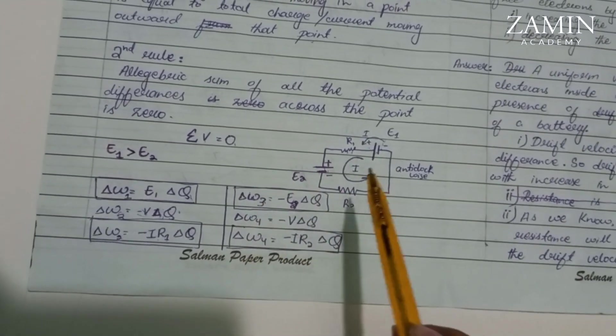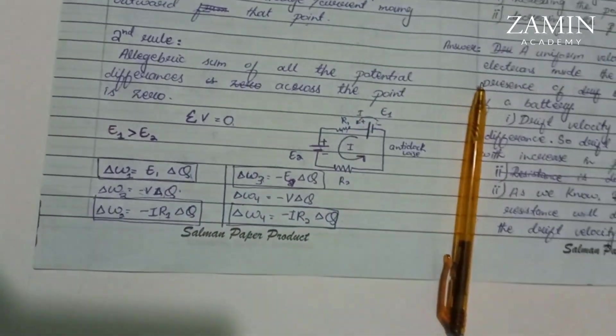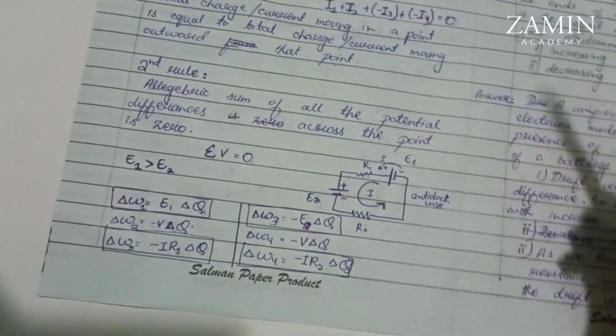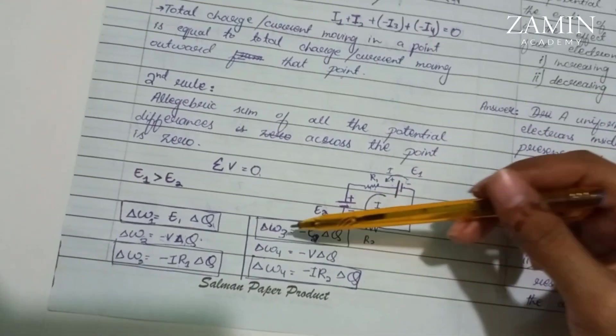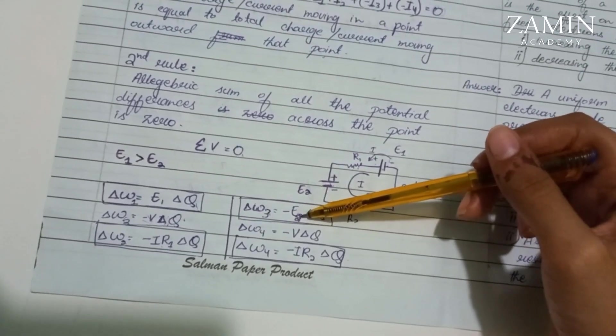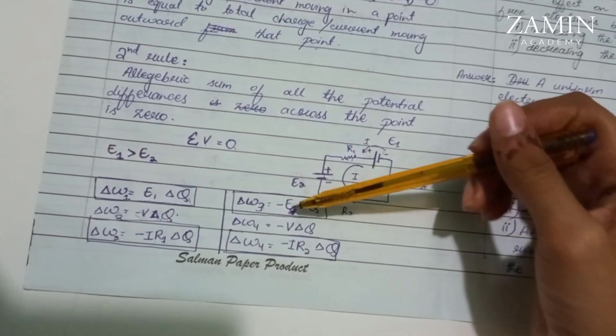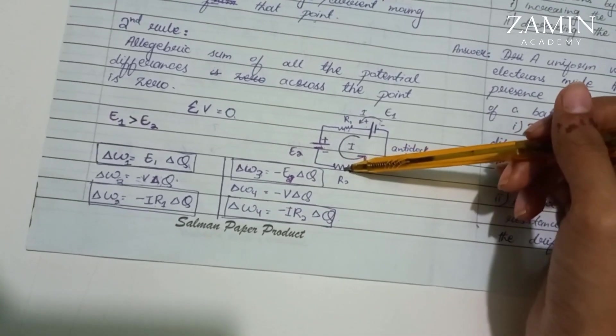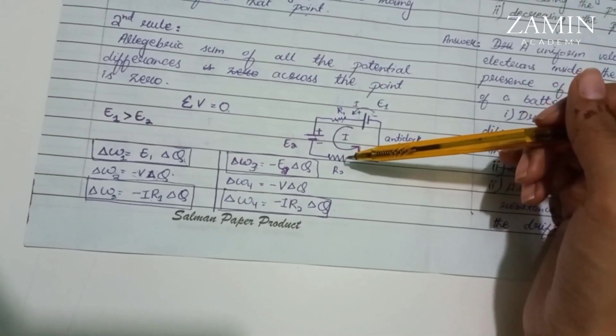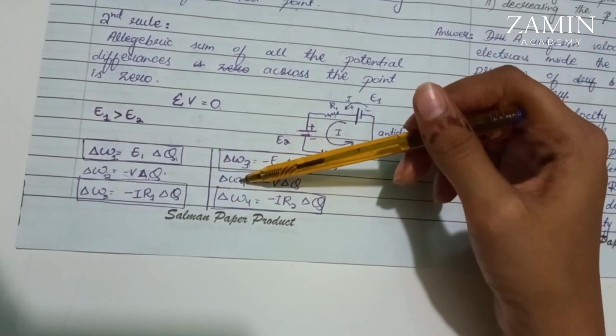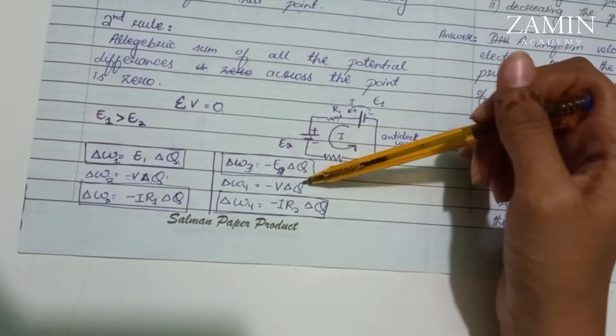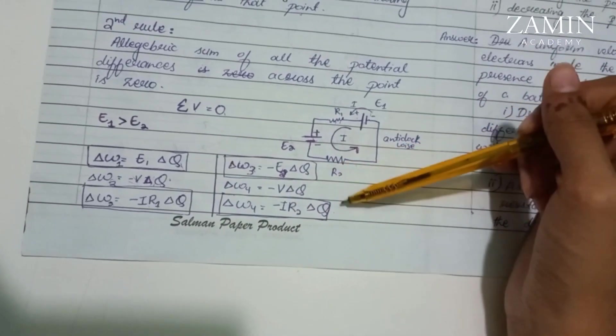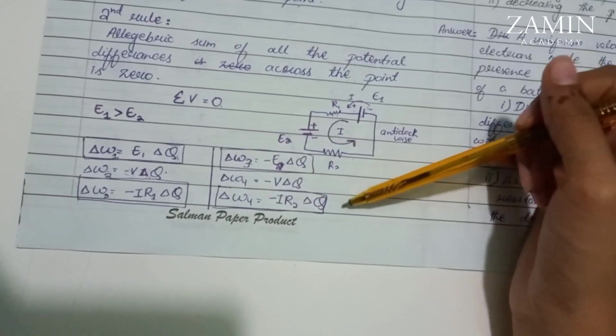Then we will calculate work done 3. Here we have a battery, so it will be minus E2 times delta q. Then we have work done 4. Here we have a resistor, so again energy is lost. Delta W4 work done 4 is minus V delta q, then V is IR2 because it's resistance 2, times delta q.